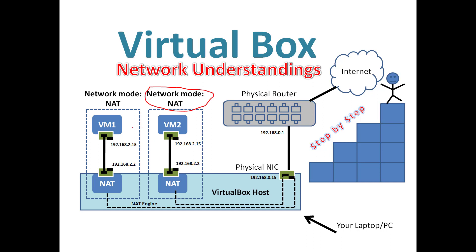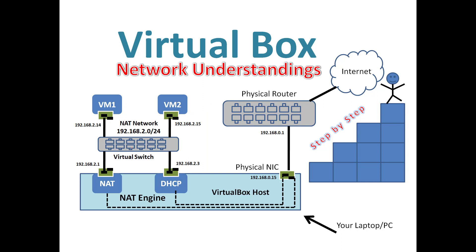The second mode is NAT Network — remember, the first is plain NAT and the second is NAT Network. In NAT Network mode, VirtualBox creates an internal switch, and your host machine gets a DHCP address on the same network. All VMs go through this internal switch, then through NAT to get outside. Importantly, your laptop — which is the VirtualBox host — can also talk to the internal VMs because it shares the same network range.